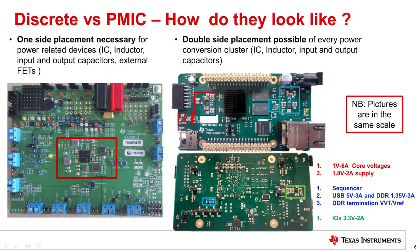These two pictures show how a PMIC on the left and a discrete power tree on the right look on a PCB. The packages have been put to scale for a fair comparison. Because of EMI prevention on a PMIC board, power devices must be placed on the same side as the PMIC — including inductors, capacitors, and external power FETs needed for high-current rails. A discrete power tree allows each converter to be placed on both sides of the PCB, as long as the passives for each converter are kept on the same side and as close as possible to each IC. Because of less heat concentration, a single IC with integrated FETs is able to dissipate the heat produced by the highest currents.